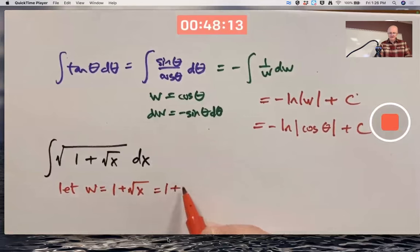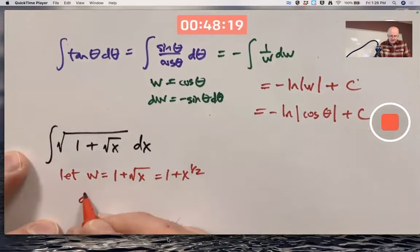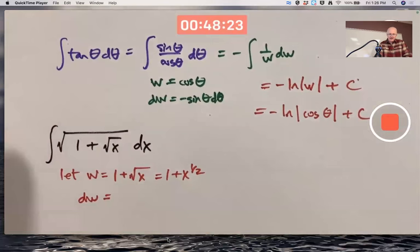This is the same as 1 plus x to the 1 half power. Now differentiate, find dw. When you differentiate 1, you get 0. That goes away. The derivative of x to the 1 half is 1 half x to the negative 1 half dx.